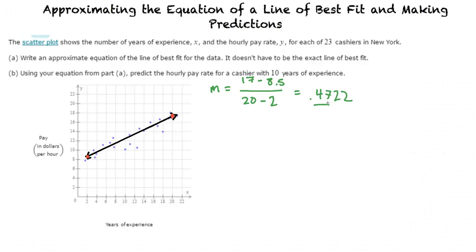We can now use this slope and the point, perhaps 2, 8.5, to figure out the line's equation. We write it in the point-slope formula as y minus 8.5 equals 0.47 times the quantity of x minus 2, because the point-slope formula is y minus the y value of the point we're using equals the slope m times the quantity of x minus the x value of the point we're using.